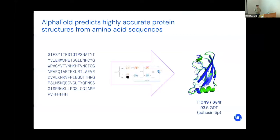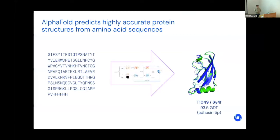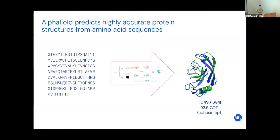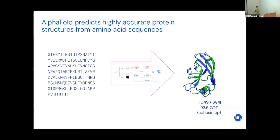The cheesy joke I like to make is that AlphaFold does computational alchemy — it takes the base metal of protein sequences, easily and cheaply obtainable, and alchemically transforms it into the gold of structural biology.